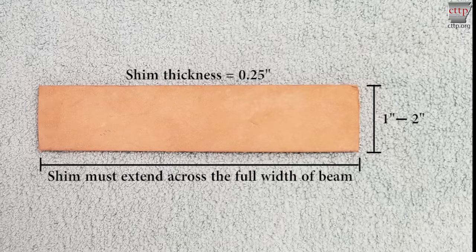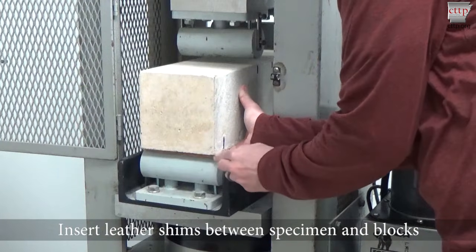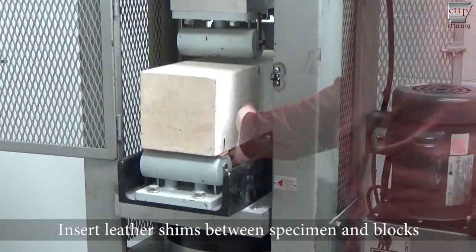Shims should have a thickness of 0.25 inches, a width of 1 to 2 inches, and should extend the full width of the beam. Insert the leather shims between the specimen and the blocks.